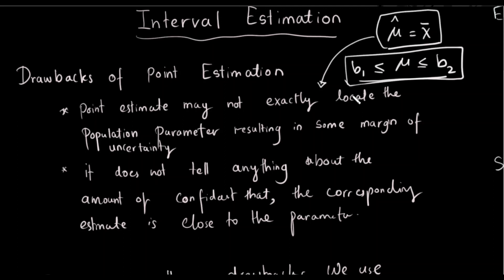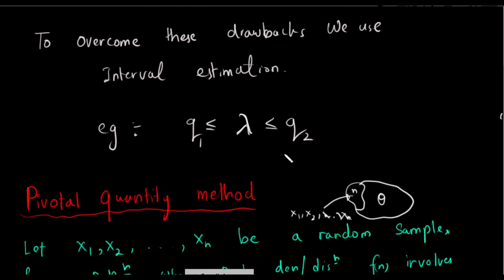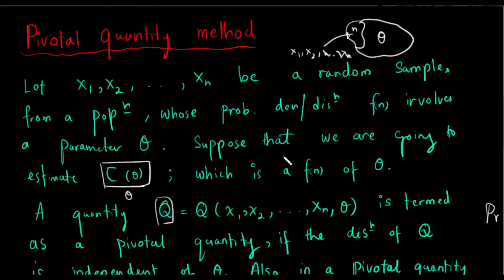If we use the interval estimation, we can use the pivotal quantity method. We will talk about the parameter lambda and the q1 and q2 values. We will talk about the interval estimation using the pivotal quantity method and the definition of x1, x2, and xn.